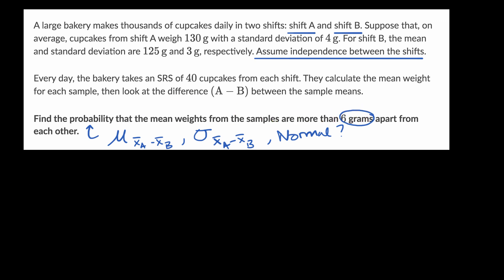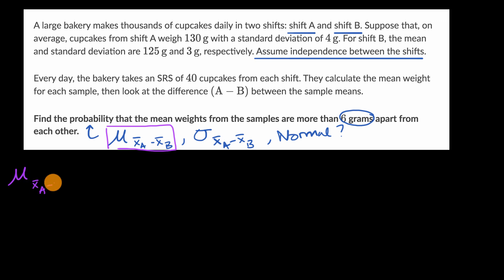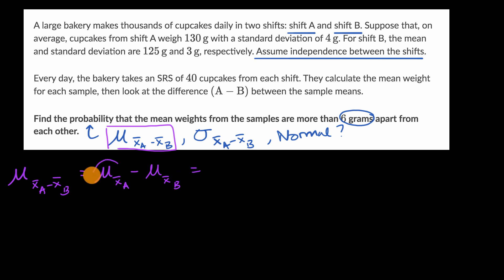Pause the video and try to find the mean of the sampling distribution for the difference in sample means. The mean of the sampling distribution for the difference in sample means equals the difference between the means of the sampling distributions for each sample mean. The mean of each sampling distribution equals the mean of the population being sampled from. So the mean for shift A's sampling distribution is just the population mean for shift A, which is 130 grams.